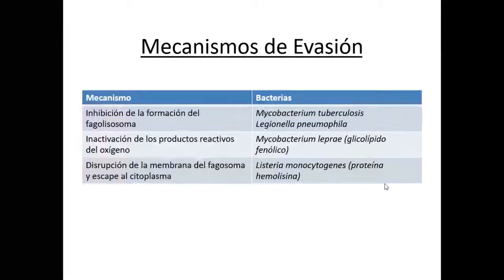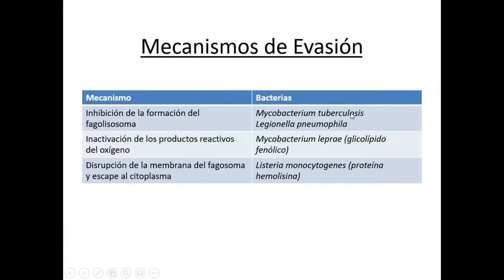También estos gérmenes evaden la respuesta inmune. Inhiben la formación del fagosoma, como lo hacen la micobacteria tuberculosa y la Legionella pneumophila. Bloquean la activación de la vía del estallido respiratorio, como hace la micobacteria leprae. También pueden escaparse del fagolisosoma atravesando su membrana, como hace la Listeria monocytogenes, valiéndose de la toxina proteína hemolisina.